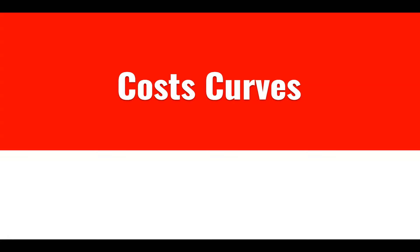This unit is extraordinarily important moving forward because we will continue to use these cost curves over the next two units as we look at perfect competition, monopoly, oligopoly, and monopolistic competition. This unit provides a foundation that will enable you to do analyses moving forward, so it's extraordinarily important that you know how to draw the curves and what they're telling us. Pay particular attention over the next couple of lessons.